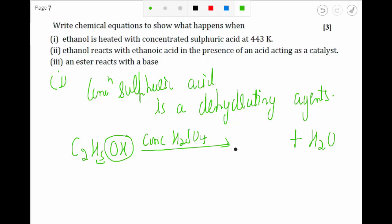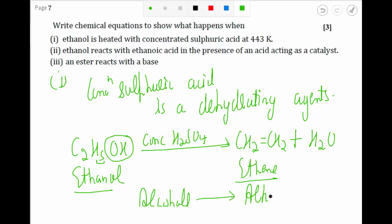What will be left will be C2H4, which is an alkene whose name is ethene. So we can say that ethanol gets converted into ethene in the presence of a dehydrating agent, which is concentrated sulfuric acid. Alcohol gets converted into alkenes in the presence of the dehydrating agent.